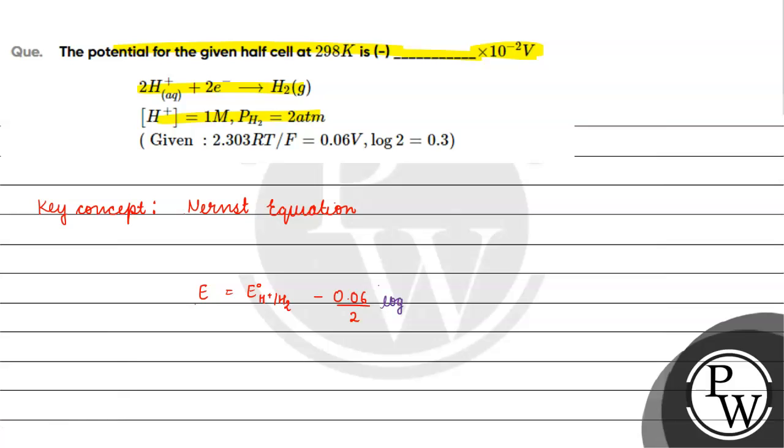Log of product, which is pressure of hydrogen gas by concentration of H⁺ raised to the power 2. E will be equal to E° for H⁺/H₂, which is 0 volts, minus 0.06 by 2 log pressure of hydrogen gas 2 by H⁺ concentration raised to the power 2. The H⁺ concentration given is 1 molar, so 1 raised to the power 2 remains 1.